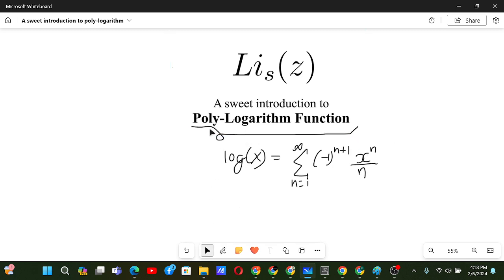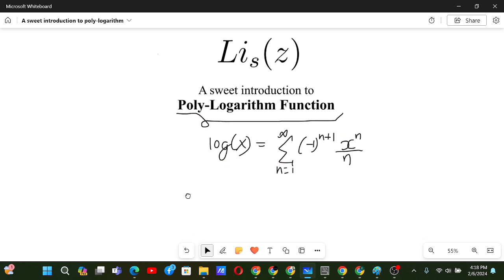Now, we have poly over here. So basically in logarithm function, we have n to the power 1. Now, if we want to generalize the power of n and remove this alternating sign thing, if we want to make this as x to the power n by n to the power s,